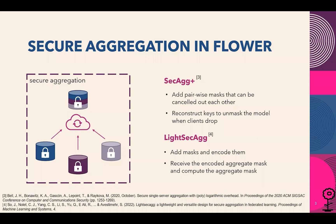Flower supports two state-of-the-art protocols. The first is the SecAgg+ protocol. In this protocol, it allows clients to add pairwise masks and individual masks to their local model updates. Pairwise masks can be canceled out simply by adding them together, and individual masks will be reconstructed at the end of secure aggregation, so the server can obtain the accurate aggregate model.